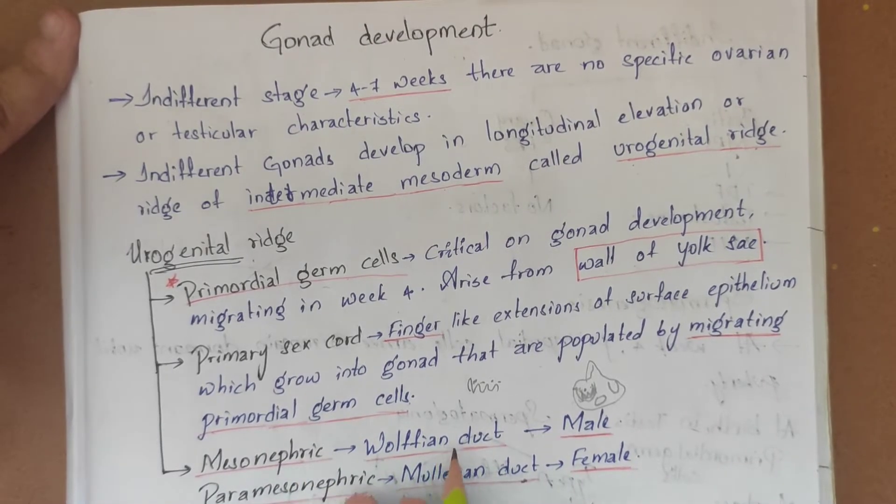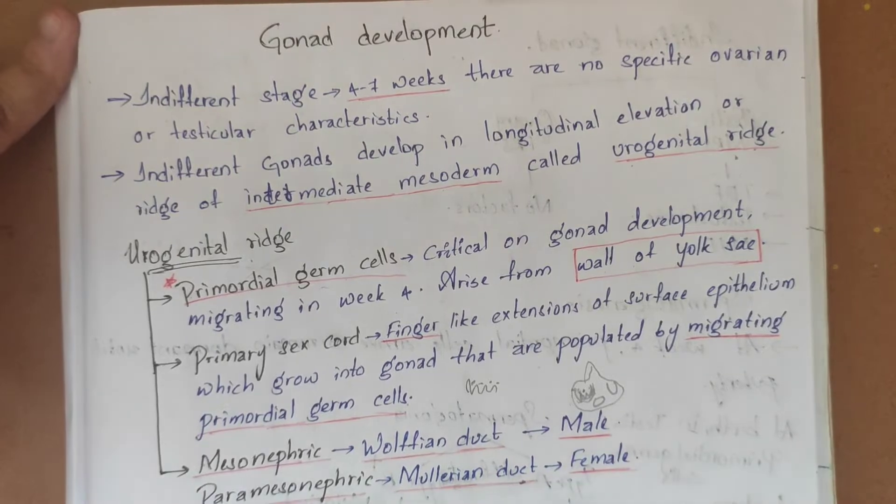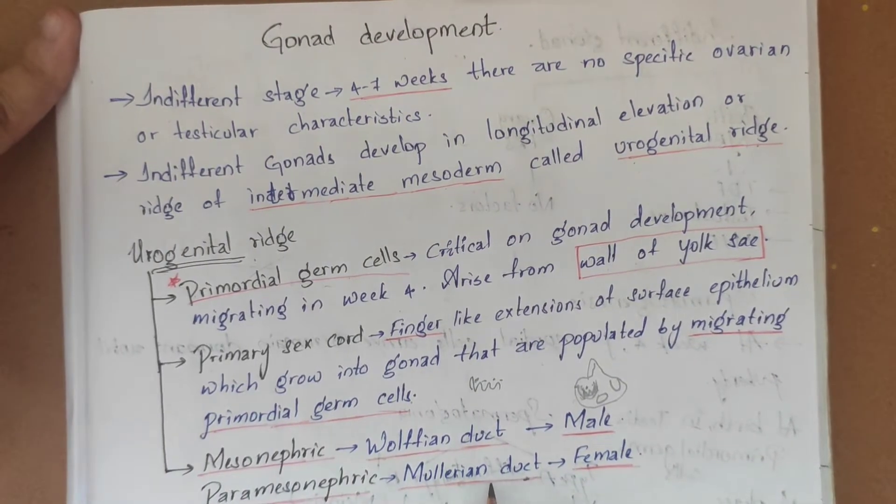Mesonephric is the Wolffian duct which is male, and paramesonephric is the Müllerian duct which is female.